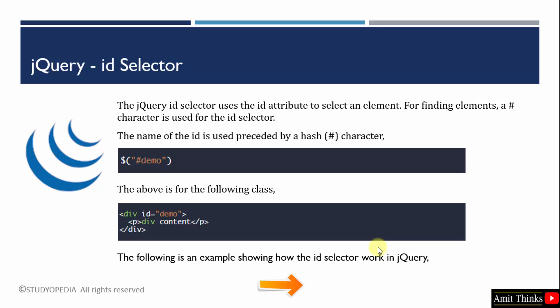Now we will see the second type of selector — the ID selector. This ID selector works like CSS. It will use the id attribute to select an element, and a hash character is used for the ID selector. The name of the id is used preceded by hash. For example, if the following is our div with id 'demo', using the id selector just add hash demo and work around it. When we see the example, things will be more clear.